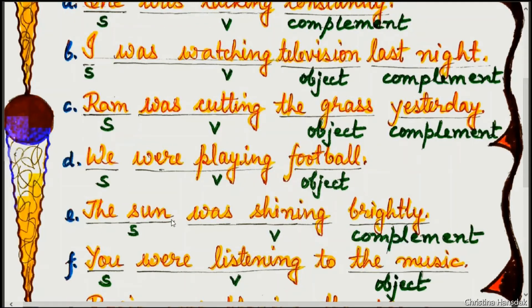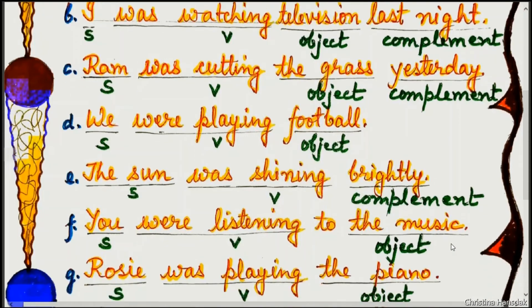Example E: The sun was shining brightly. 'The sun' is the subject, 'was shining' is the verb with additional -ing, and 'brightly' is the complement.